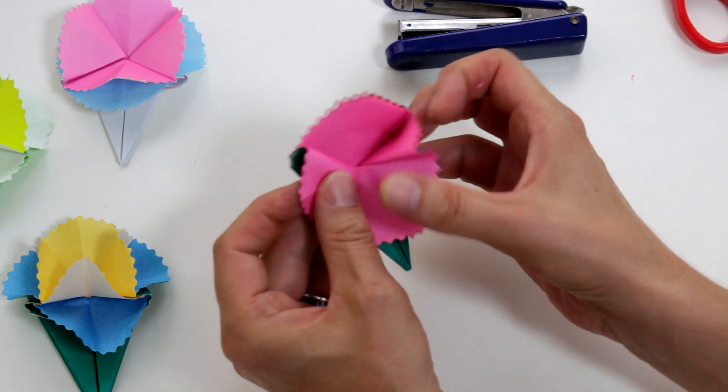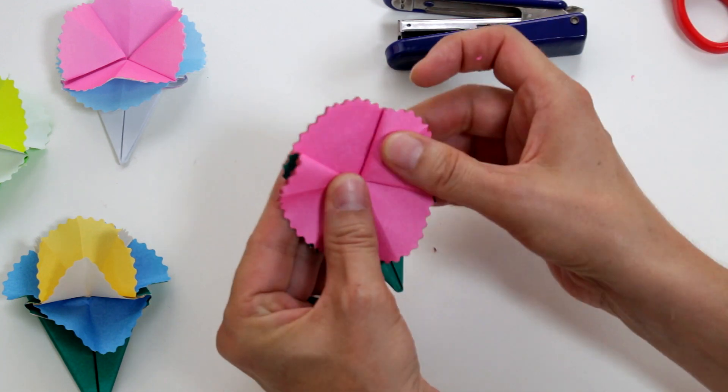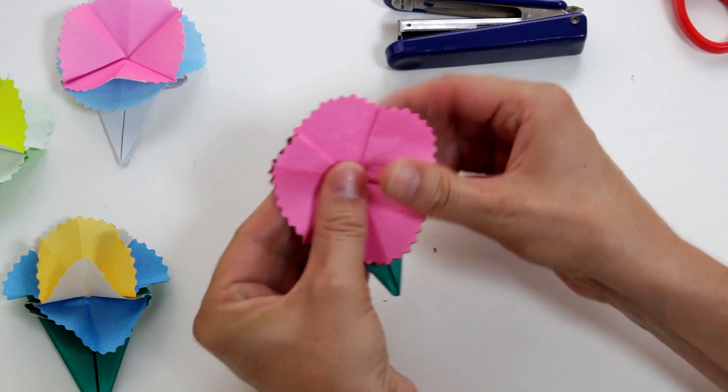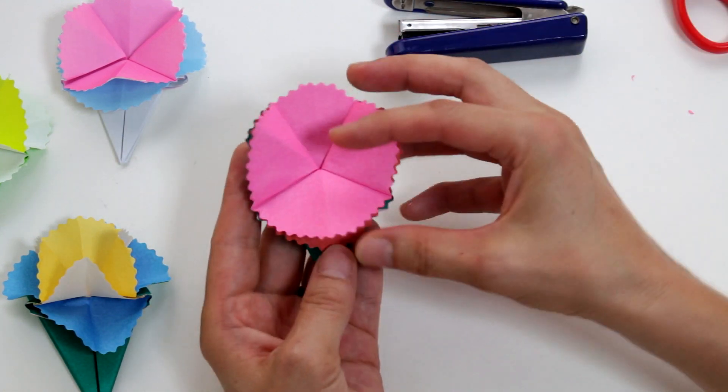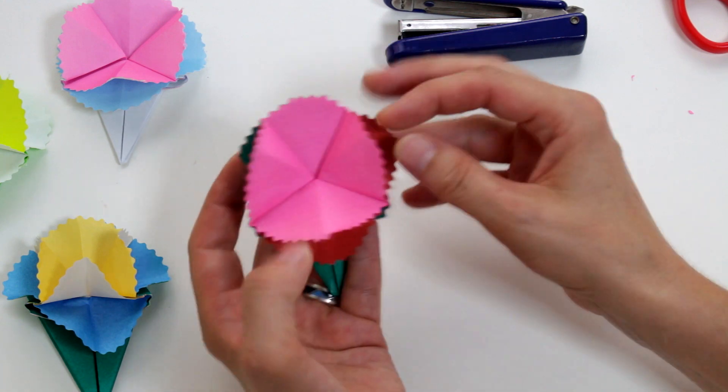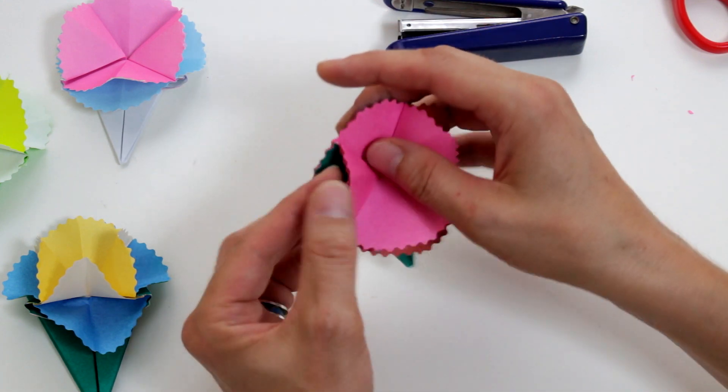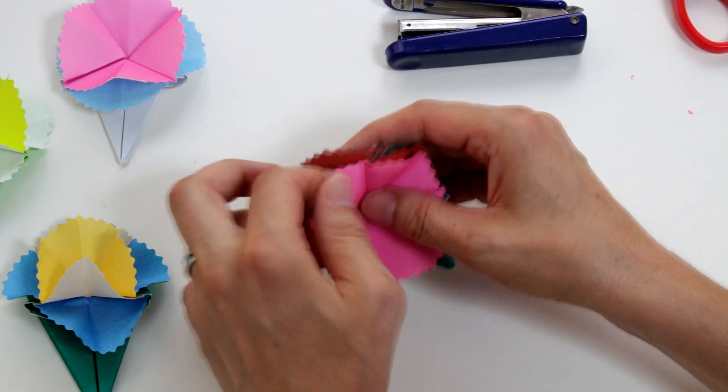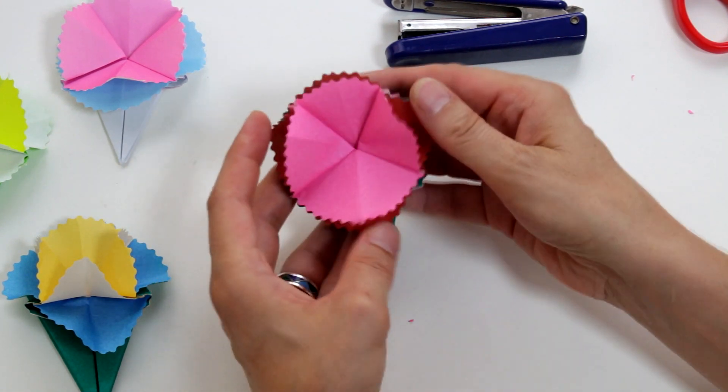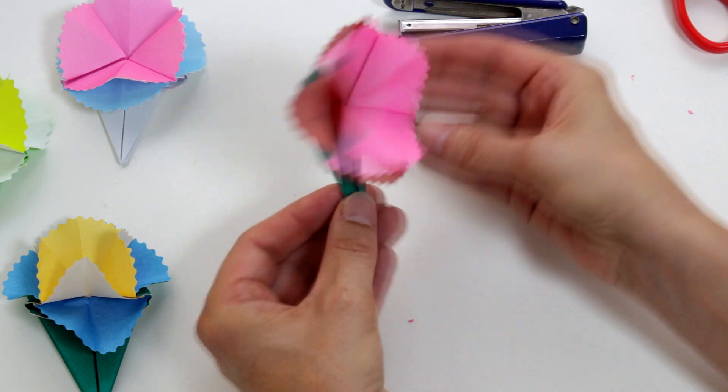Okay, and now we're going to open the petals, press them a little bit, and then just open the two layers of petals, which means to separate them. This is it.